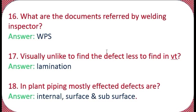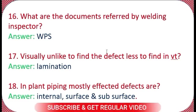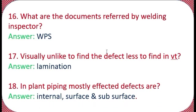Question 16: What are the documents referred to by a welding inspector? The answer includes the WPS. Question 17: Which defect is least likely to be found by visual testing (VT)? The answer is lamination — you cannot find lamination through visual inspection.